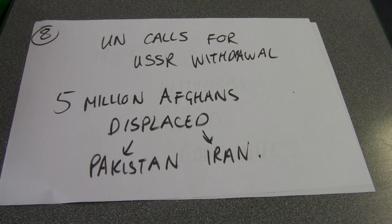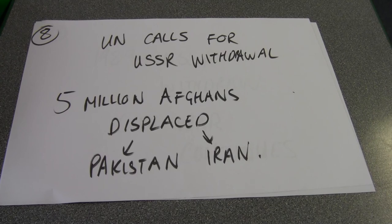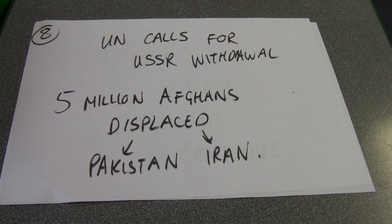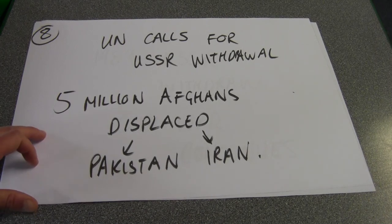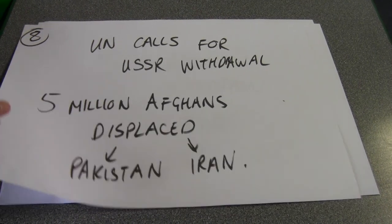Because of all the bloodshed, the United Nations called for a full withdrawal of the USSR from Afghanistan. Among the consequences, 5 million Afghans were displaced into neighbouring countries such as Pakistan and Iran. It's important to remember that Pakistan and Iran are also heavily conservative and heavily Islamic countries, which will be vital as we look at how this develops post-9/11.